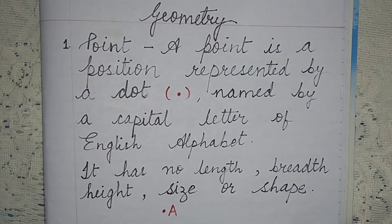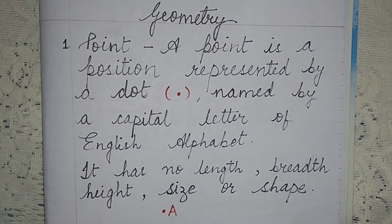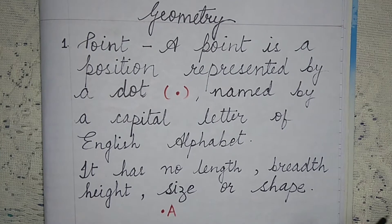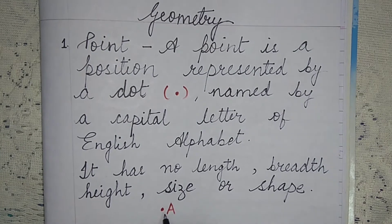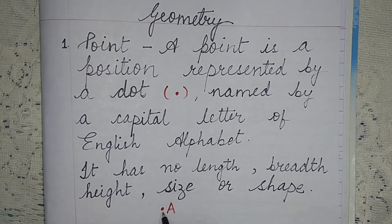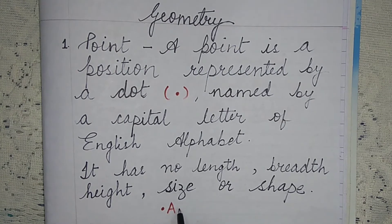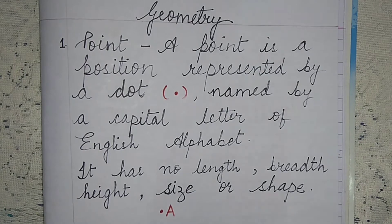We have given a dot, we call it a point. We denote it with a capital letter, and it does not have length, breadth, height, size or shape. Here we have a dot and it is written A — that is point A.